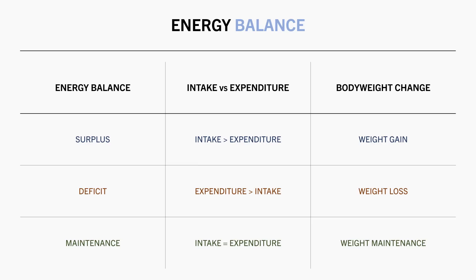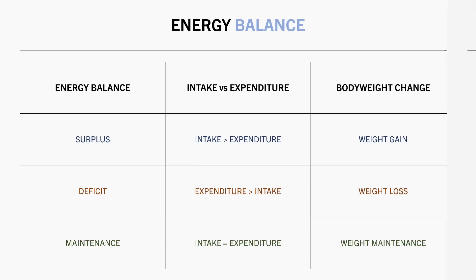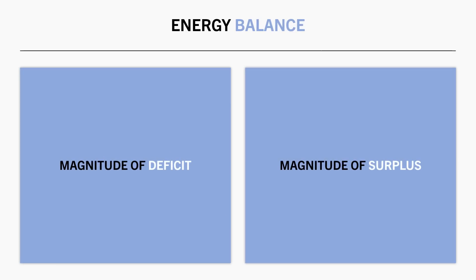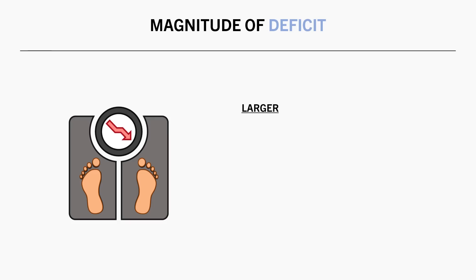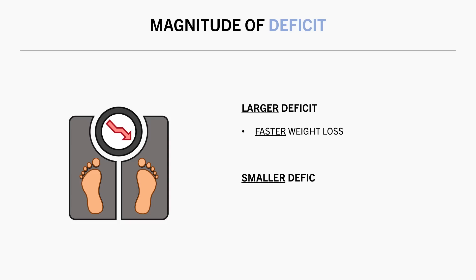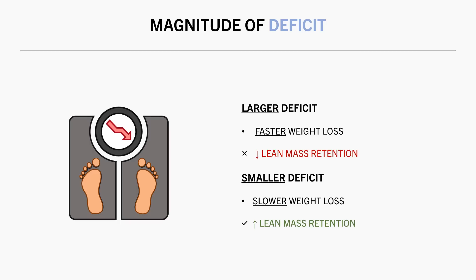If we want to either gain or lose weight, how much of a calorie surplus or deficit should we aim for? A larger calorie deficit will result in a faster rate of weight loss, while a smaller deficit will result in slower weight loss. In most cases, a faster rate of weight loss tends to result in slightly greater losses in lean mass as a proportion of total weight loss. So if your goal is to maintain as much lean mass as possible during weight loss, then a slower rate of weight loss is generally advised.